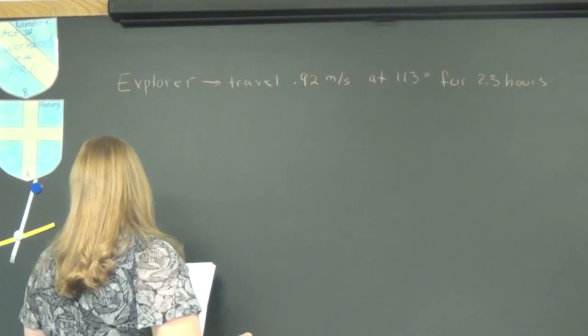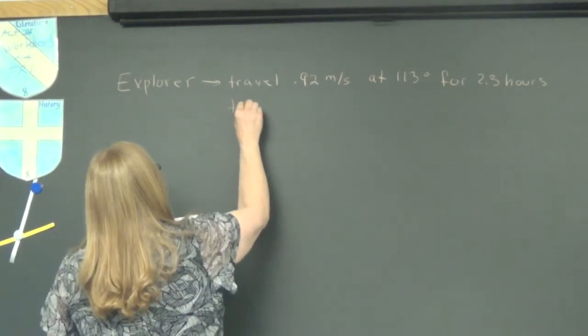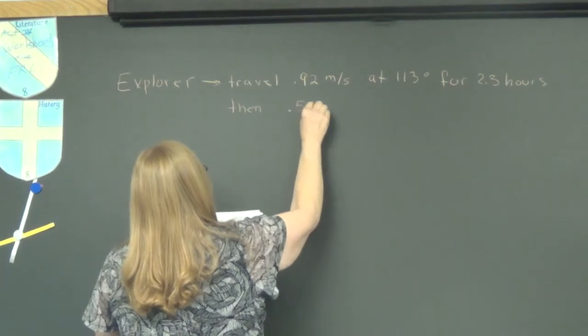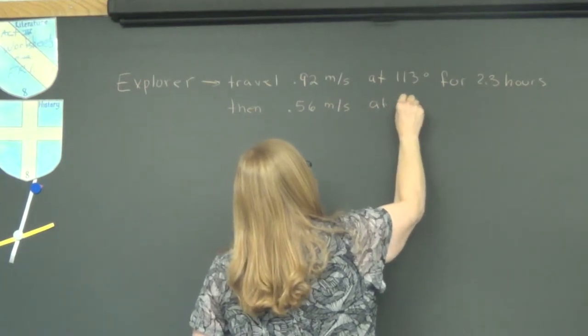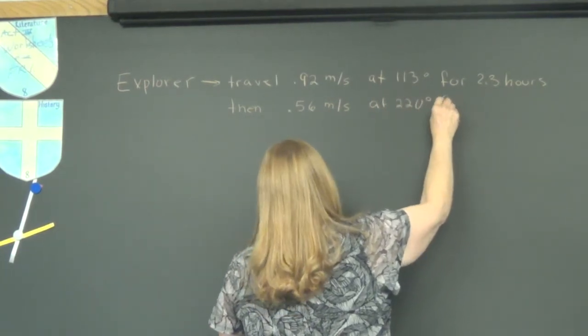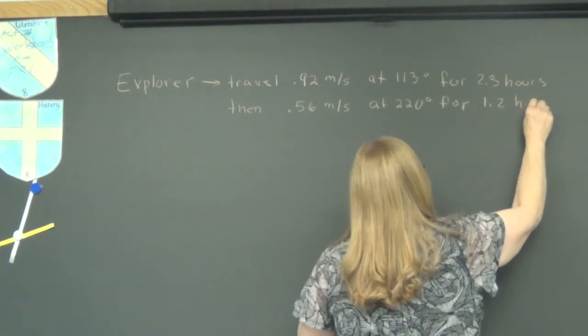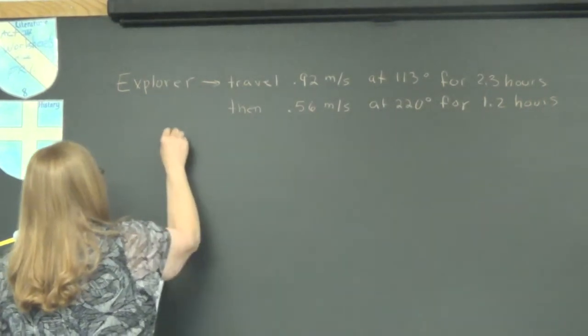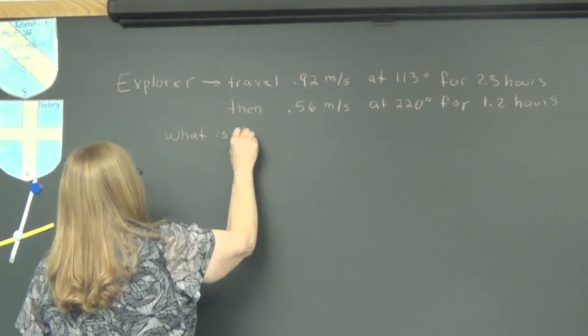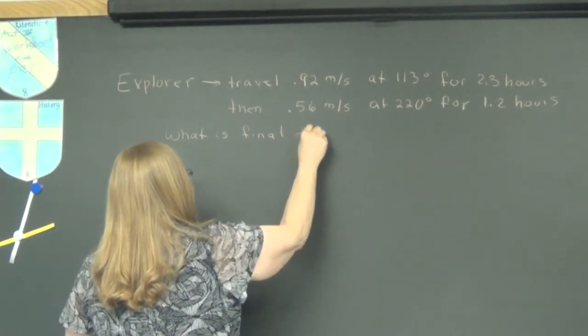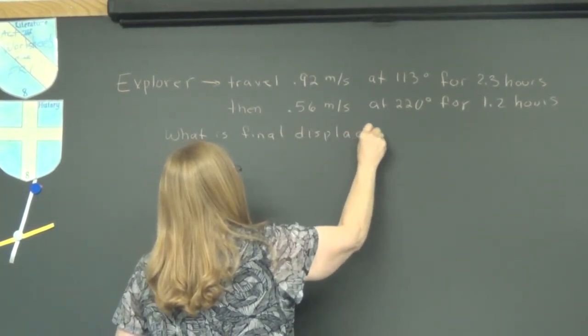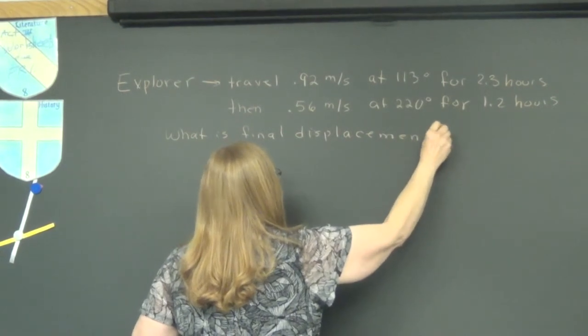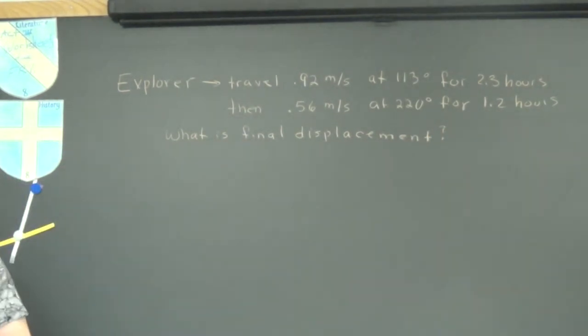Then after that, they're going to change and go 0.56 meters per second at 220 degrees, and they're going to do this for 1.2 hours. And the question is, what is the final displacement? They started somewhere and they ended somewhere, did they not?